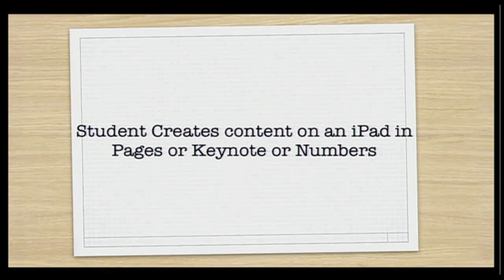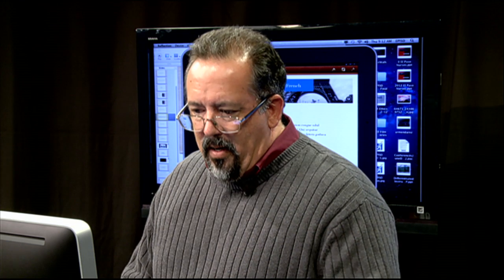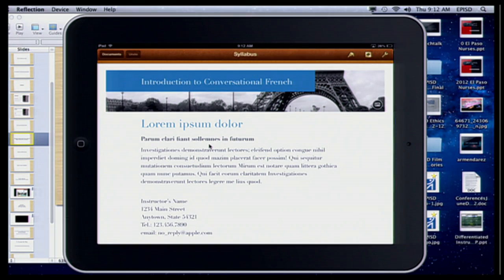So let's see how this works. The student will create some kind of content, either in Numbers, Pages, or Keynote. Pages is the word processing program, Keynote is the presentation program — kind of like PowerPoint — and Numbers is a spreadsheet. Probably your students will be working with Pages and Keynote more than with a spreadsheet, especially for our TLI grantees. Just real quick, just to show you how that works — this is Pages to make a document.